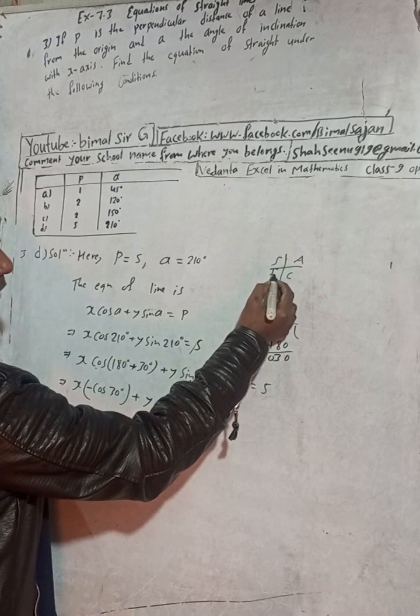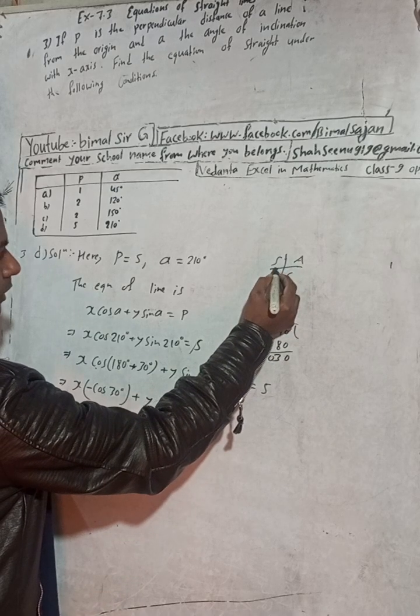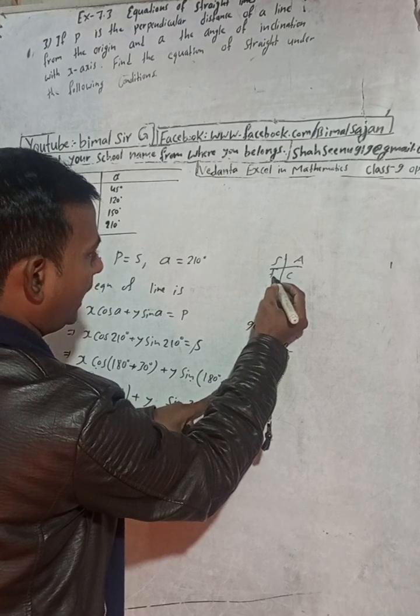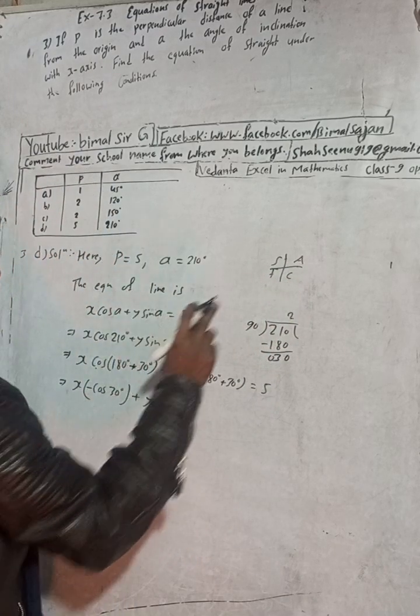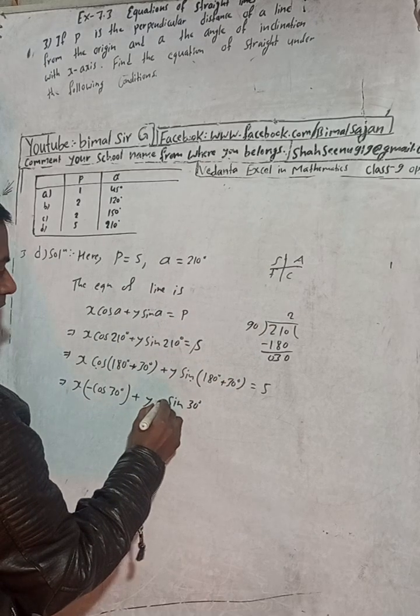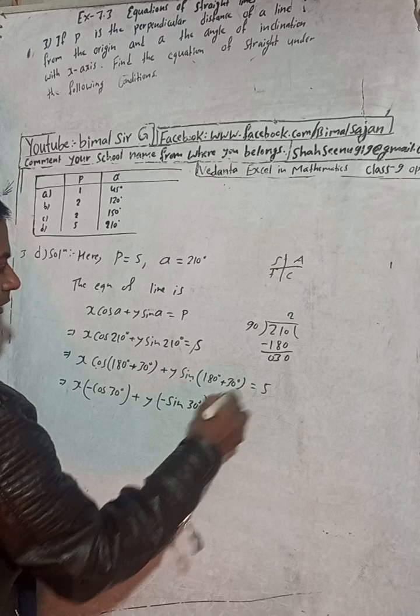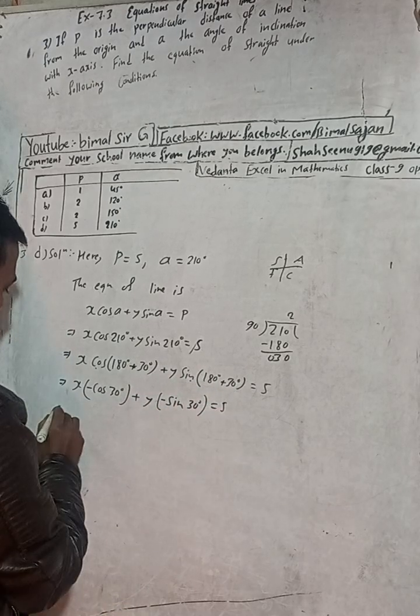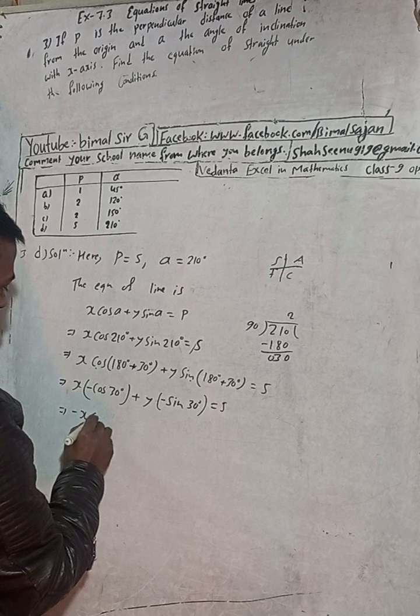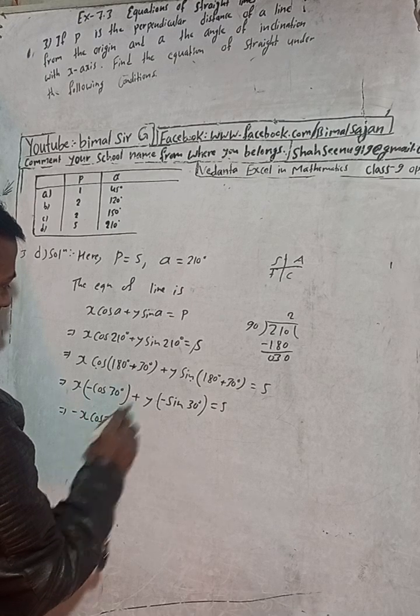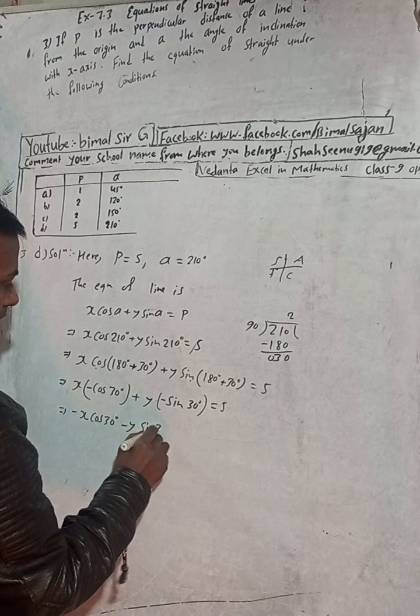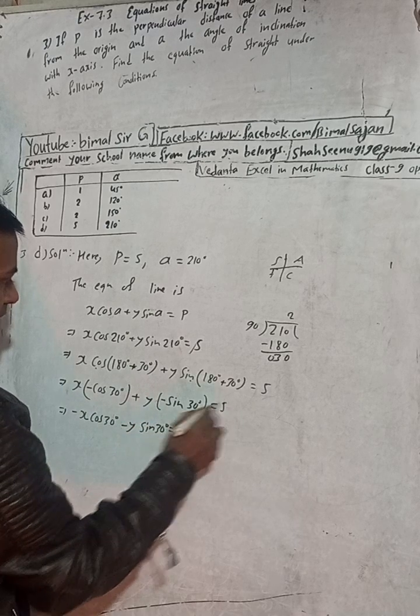180 plus 30 is in third quadrant. In third quadrant, tan and cot are positive and this is negative, so put here minus. Equals 5. Now minus x cos 30 degrees minus y sin 30 degrees equals 5.